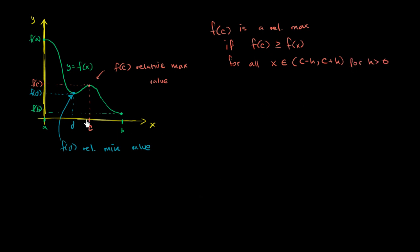Does that make sense? Let's construct an open interval. For all of the x values in that interval — and you just have to find one open interval, although there might be many open intervals where this is true — if we construct an open interval like that, this value right over here is c plus h, that value is c minus h, and you see that over that interval, the function at c, f of c, is definitely greater than or equal to the value of the function over any other part of that open interval.